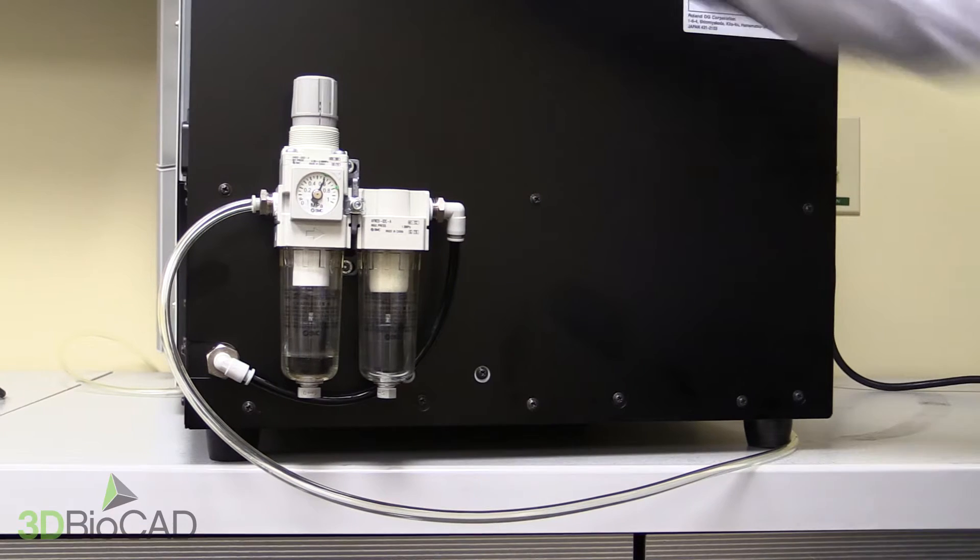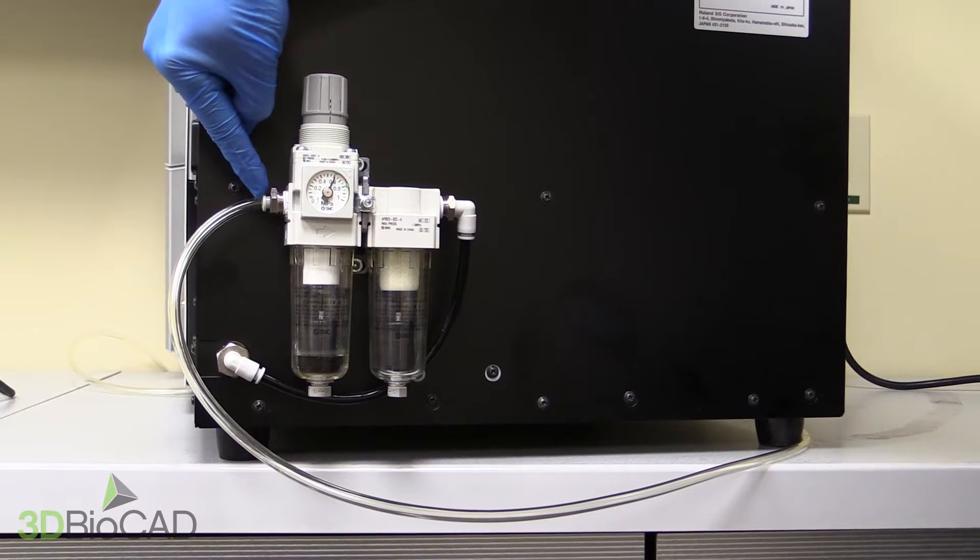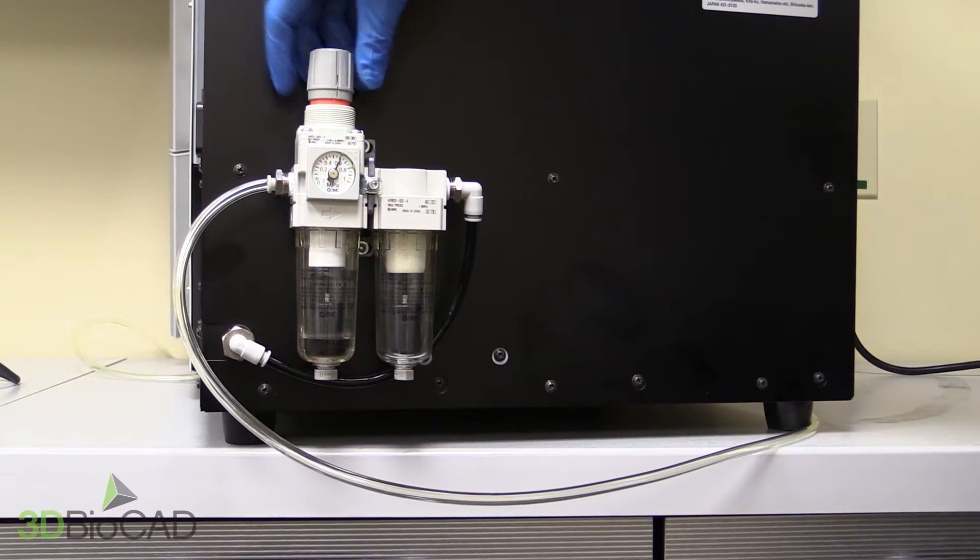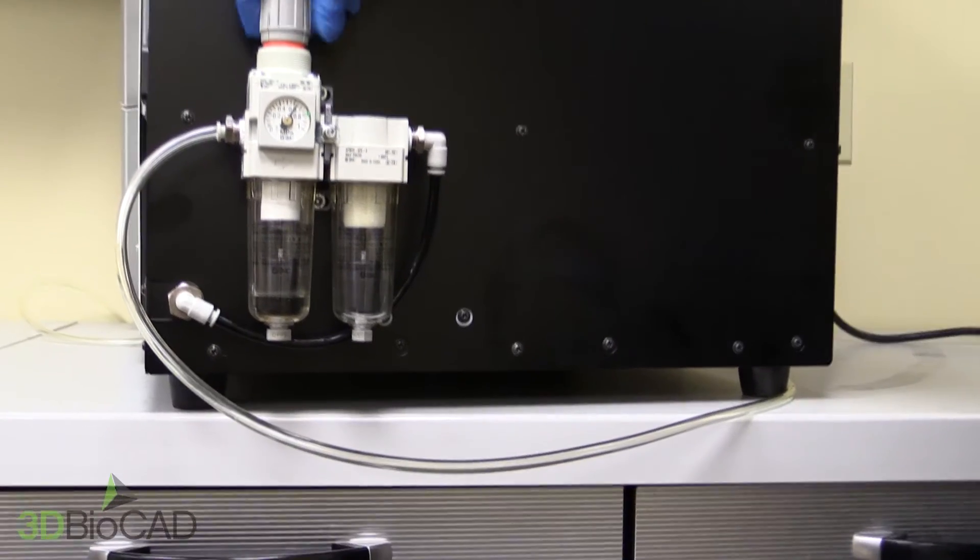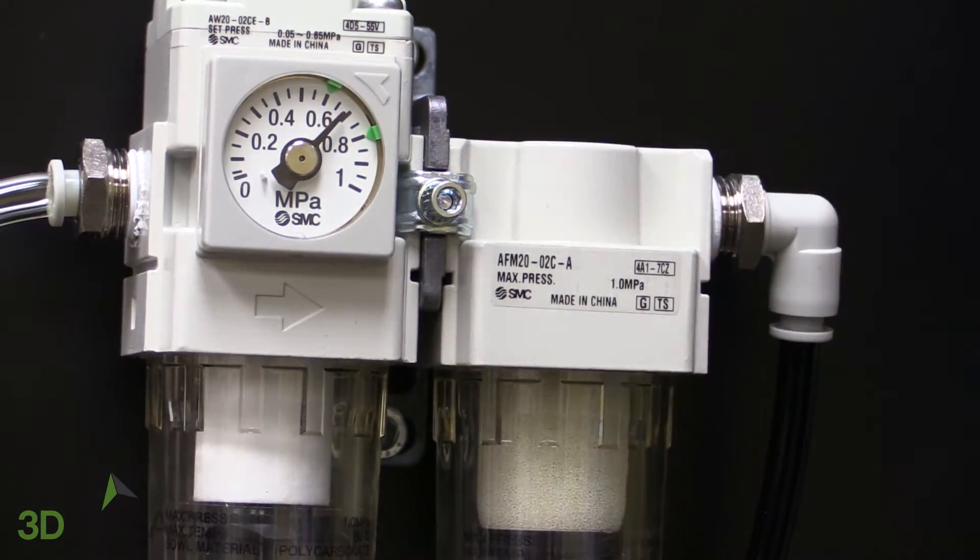The air hose connects to the left side of the air regulator. Pull up on the gray upper knob and turn clockwise until pressure is between 6 and 8.